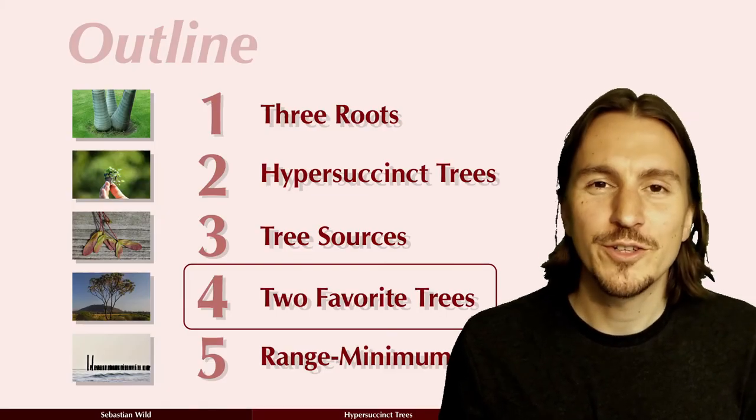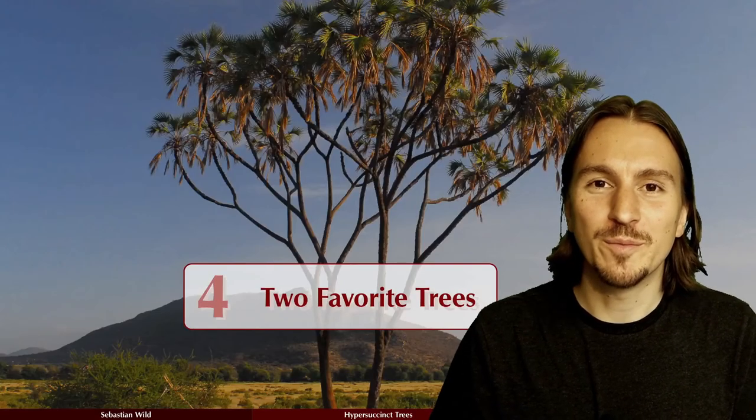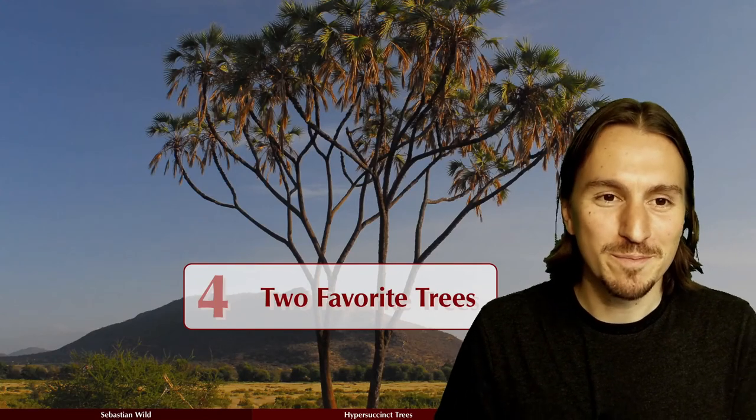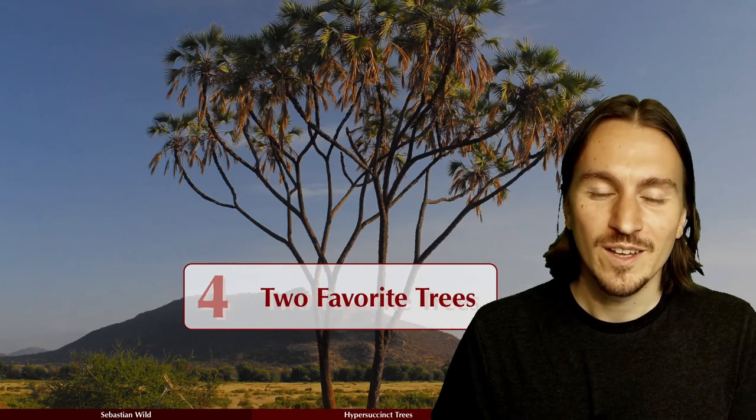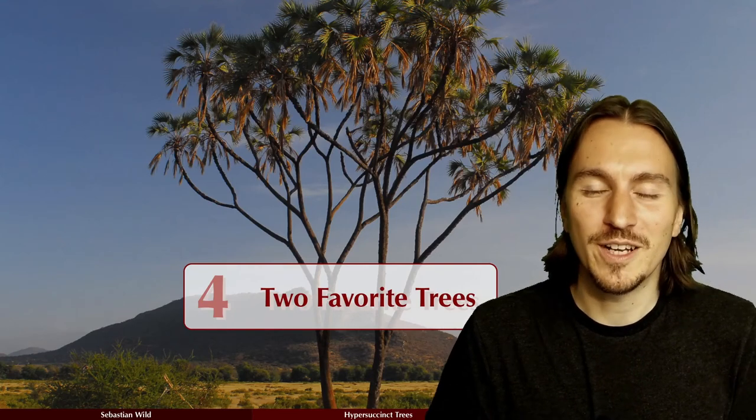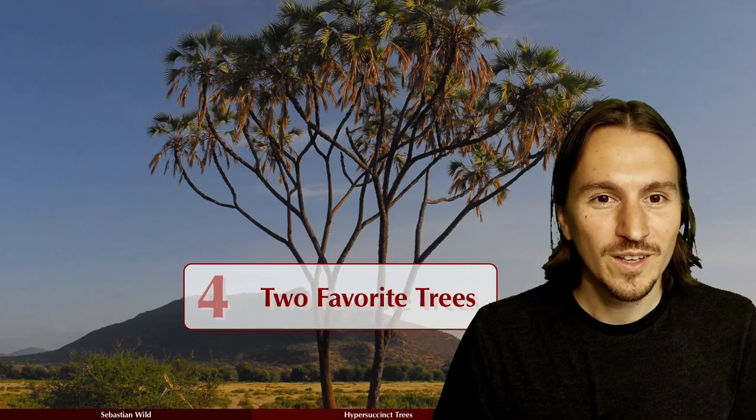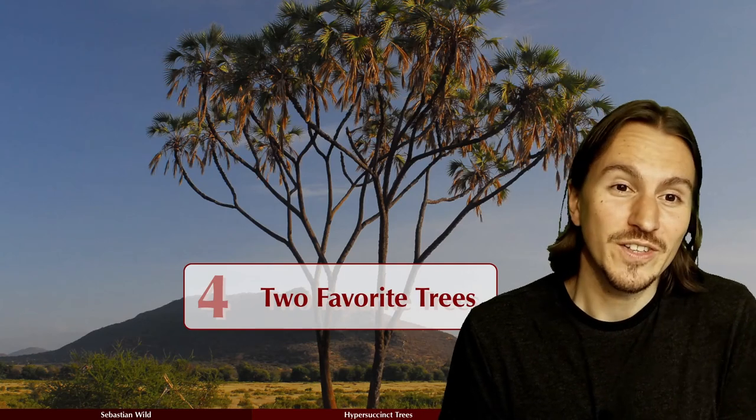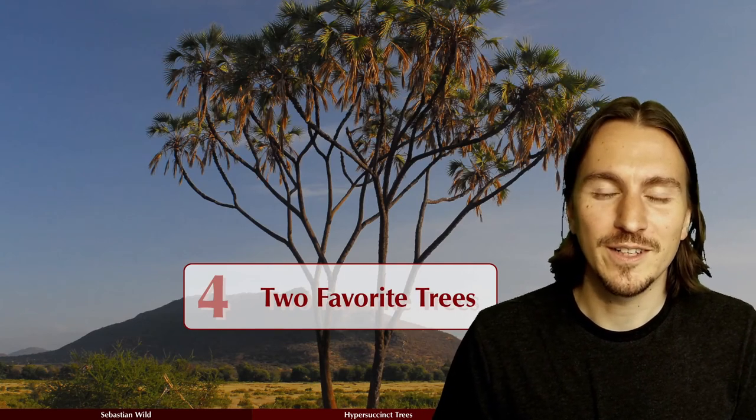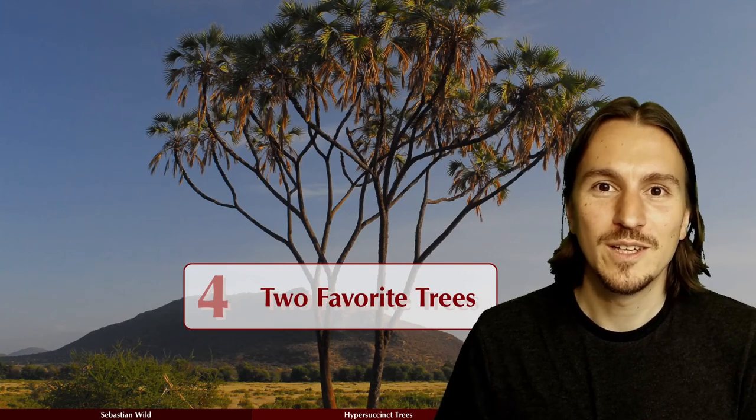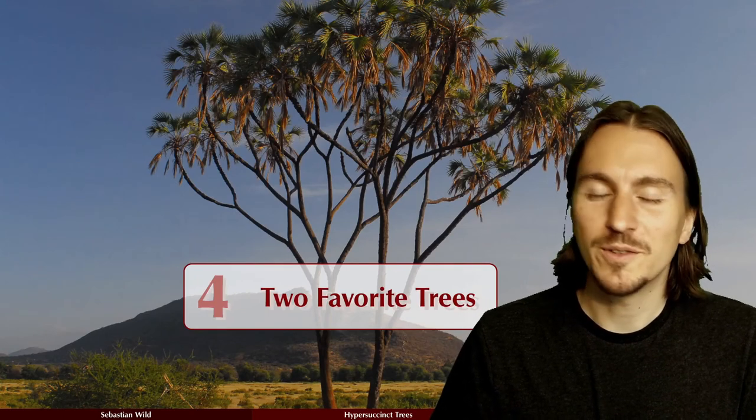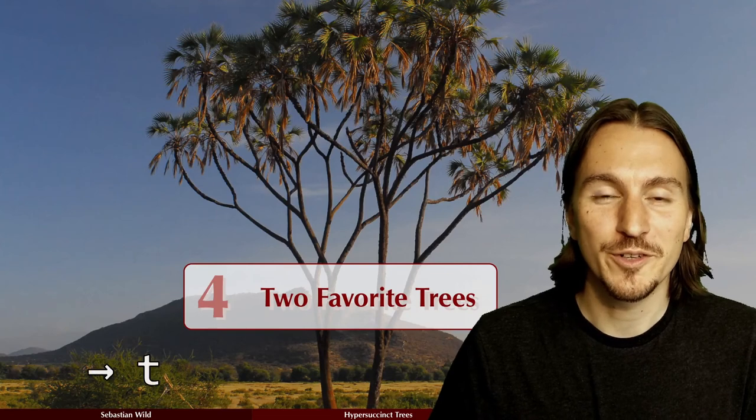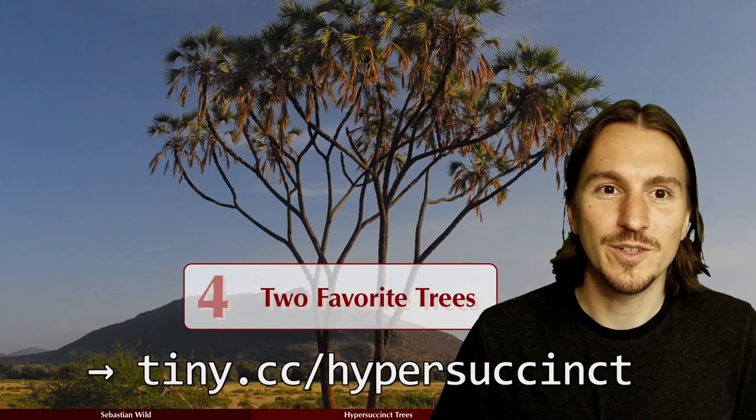In the long version of this video, I give my two favorite examples of binary trees, namely random binary search trees and uniform weight balanced search trees, to illustrate how our analysis works for these two. And these are also the two hardest cases in a sense, because they require all the analysis bits and pieces that work for the general sources that we've discussed before. For this video, I want to leave it with that and refer you to the long version of this video for more details.